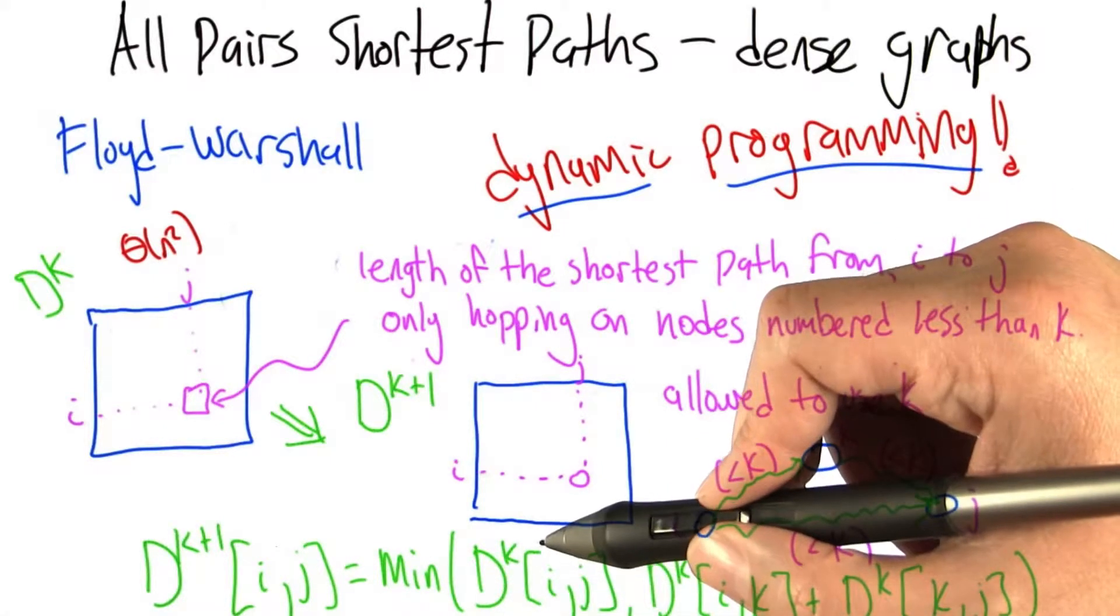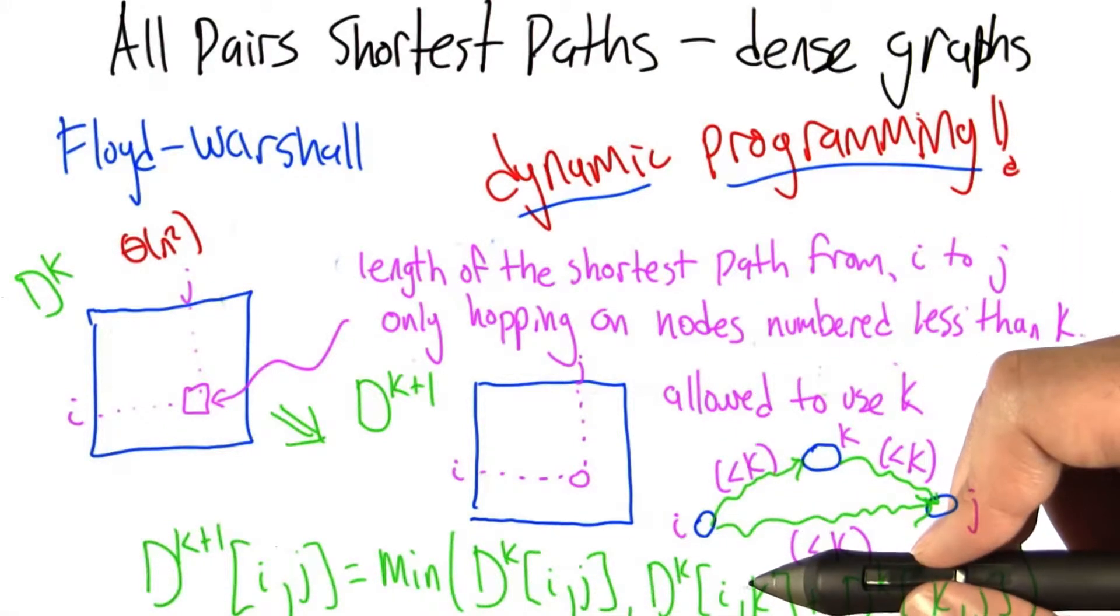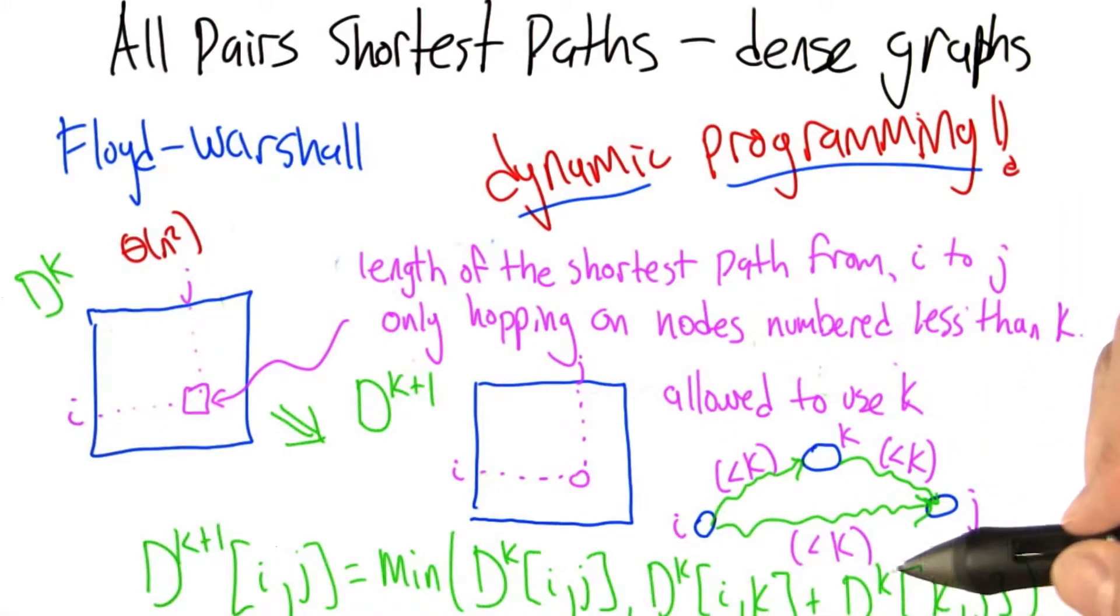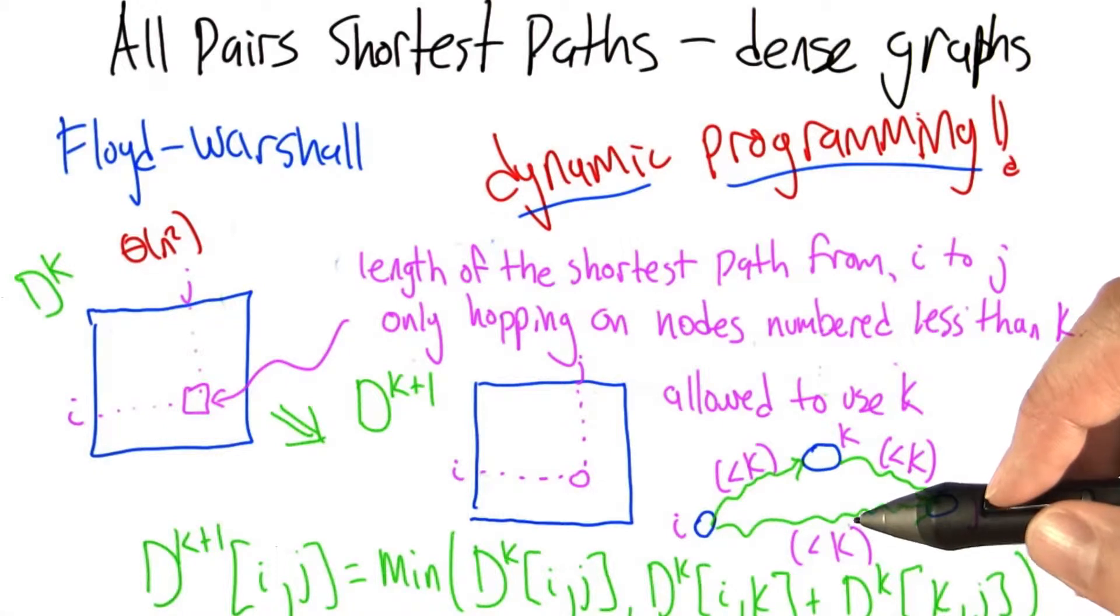So all we need to do is compare the distance from i to j not using k, and the distance from i to k not using k plus k to j not using k. It's weird, but it's the right thing to do. So we can take advantage of this insight to actually create an efficient algorithm.